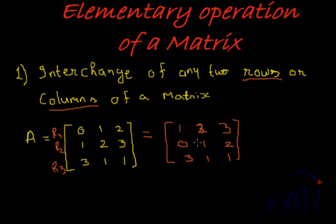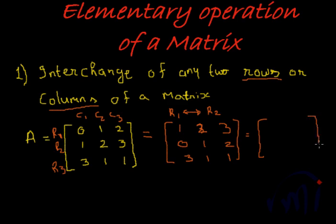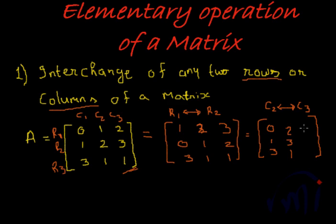This operation is denoted as r1 with an arrow pointing to r2, meaning we have interchanged row one with row two. Similarly, if we have column one, column two, and column three, interchanging columns also does not change the nature of the matrix. Suppose we do c2 ↔ c3 on the original matrix — all these resulting matrices are equivalent matrices.